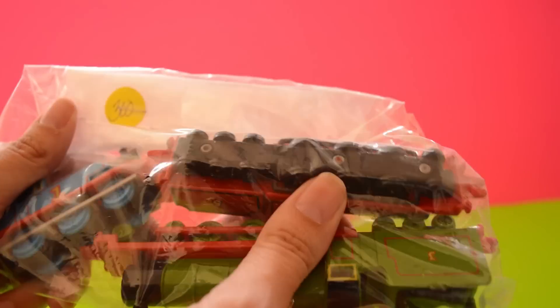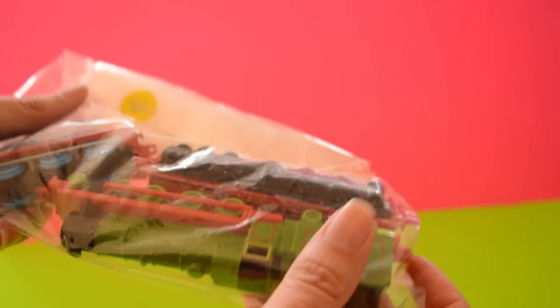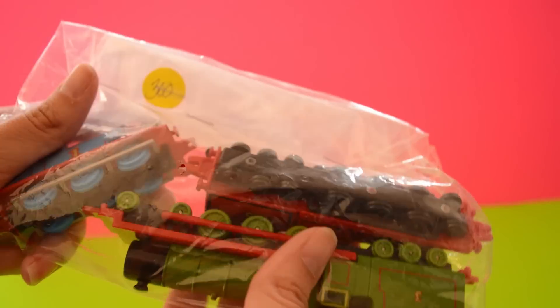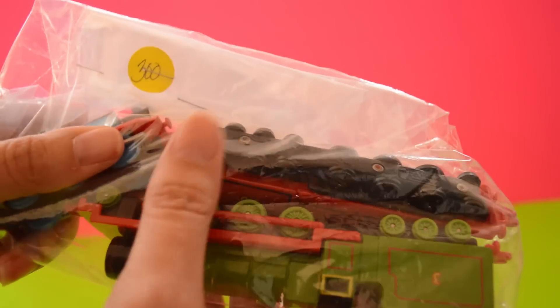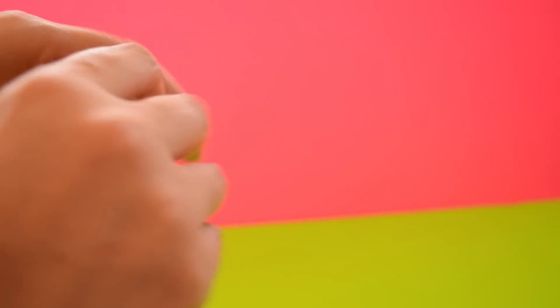So we can tell that these are die-cast Thomas trains of some sort, but we don't know what they are. They're not Take-n-Play because they don't magnet together. So if they're Take-n-Play, then it's an older rendition of them. Obviously they're not Track Masters or Wooden Railways, so let's take them out.